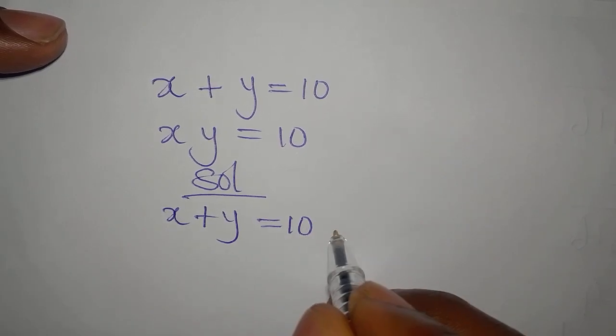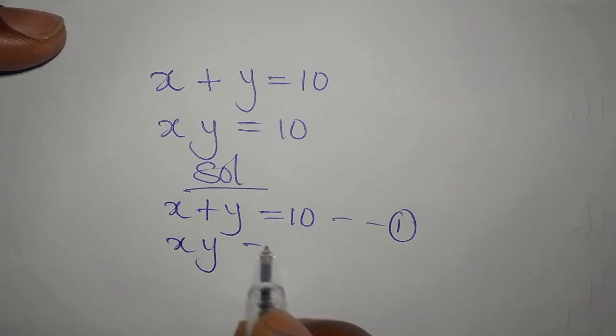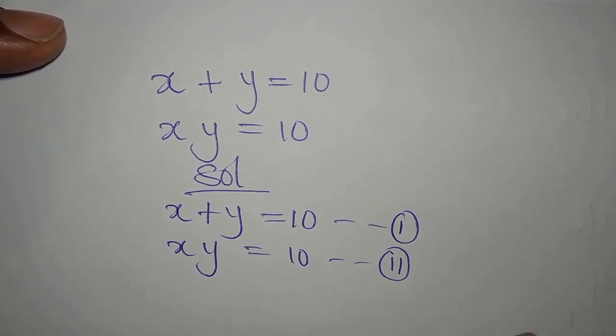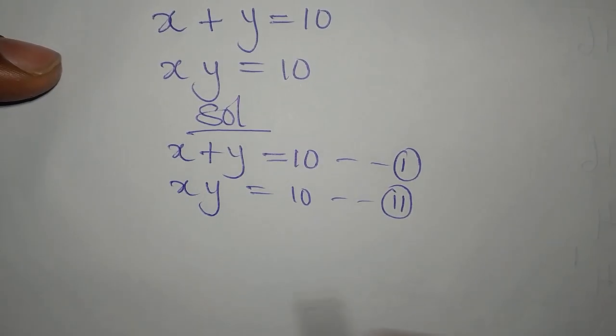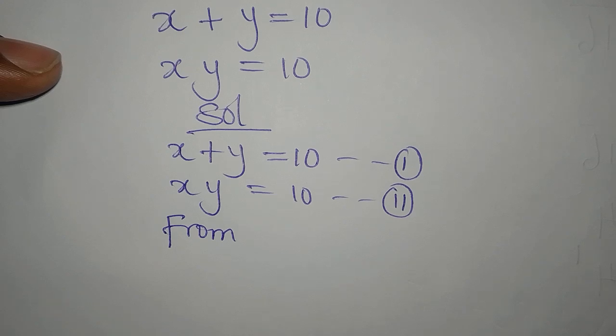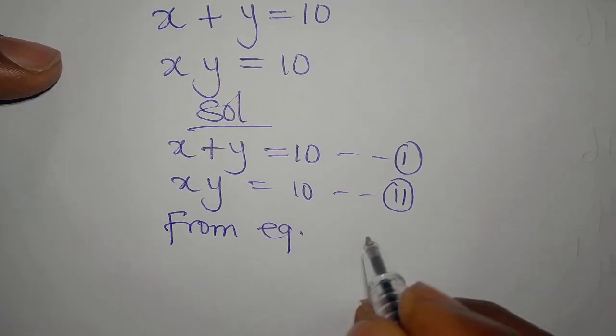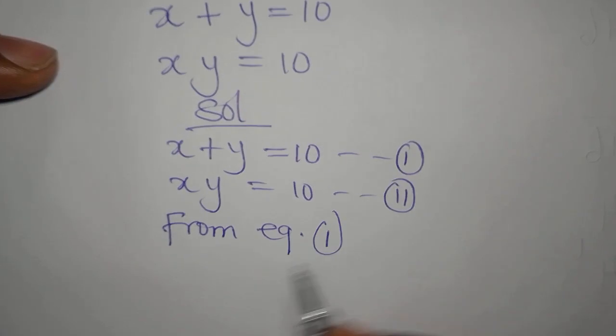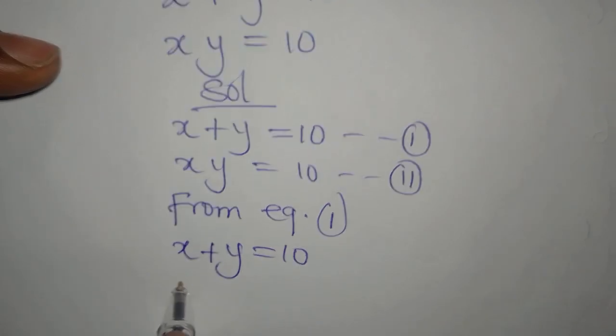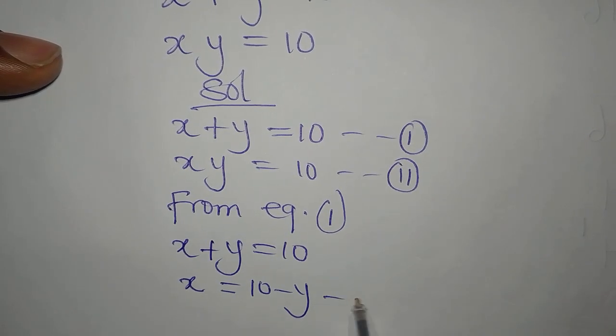This is our equation one, then xy equals ten is our equation two. From equation one, we have x plus y equals 10. Now x is 10 minus y. Let's call this our equation three.